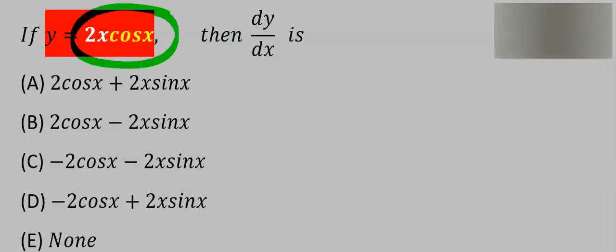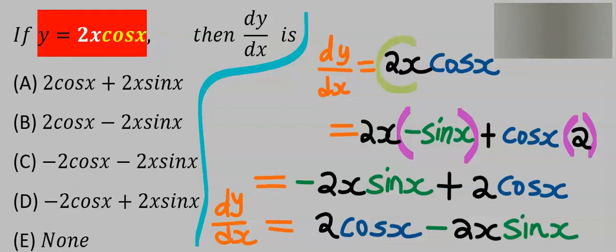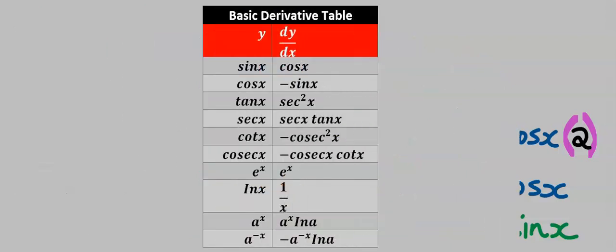Find the derivative of this function. To solve this, keep 2x constant and differentiate cos x. From the basic derivative table, when you differentiate cos x you're going to get minus sine x.